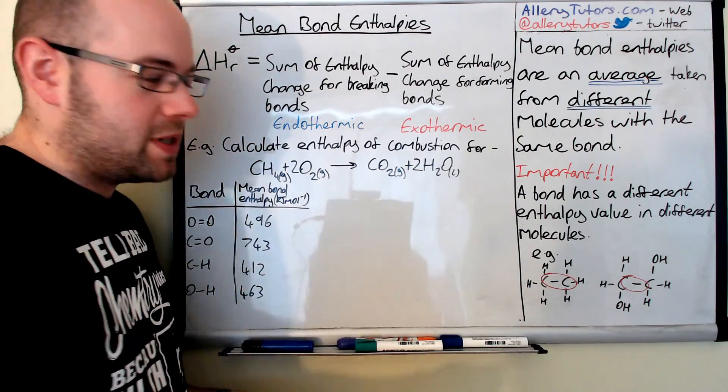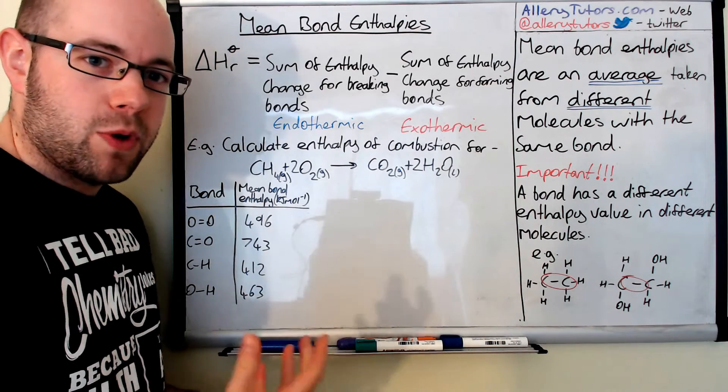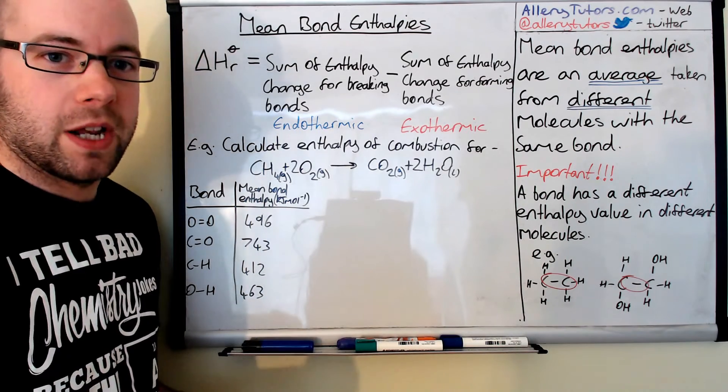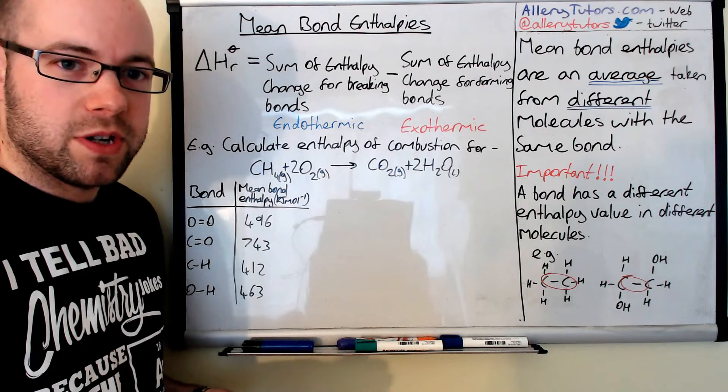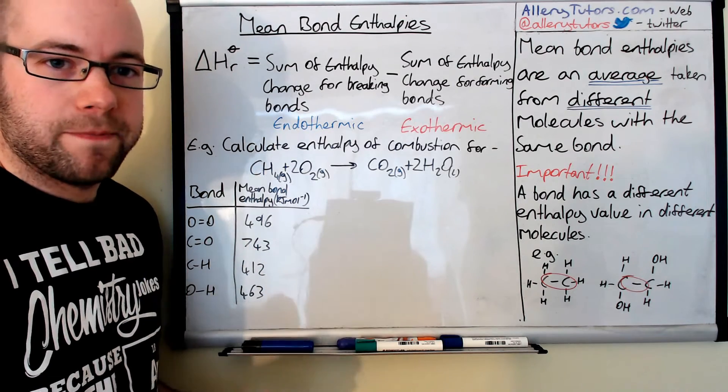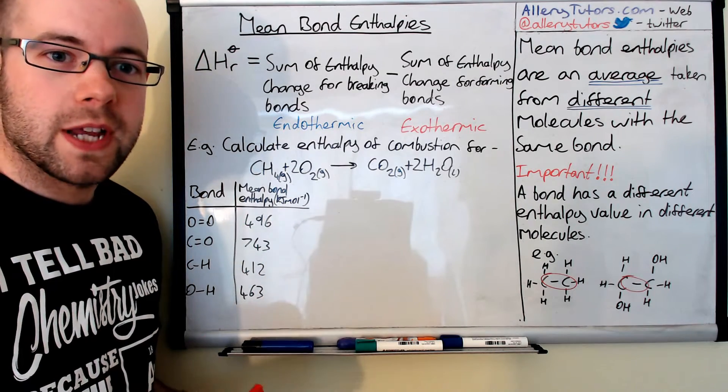So what we can do is we can take those two numbers there and work out an average bond enthalpy, and we call that a mean bond enthalpy, and they're the values that we use in chemistry in the example that we're going to use here.